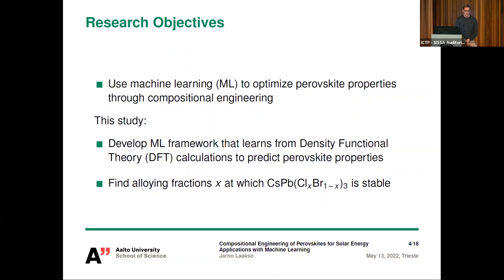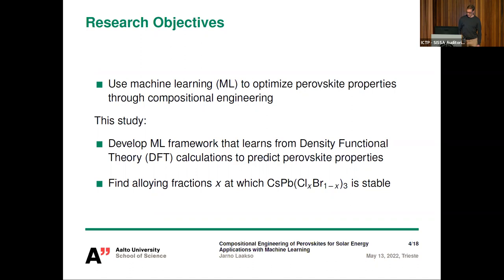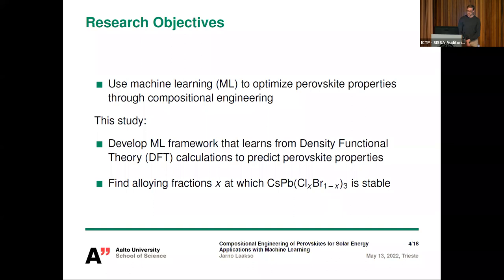In this presentation I'm going to show you the first couple of steps towards this goal. I'm presenting our development of a machine learning framework that learns from density functional theory calculations to predict perovskite properties quickly, and then applying that framework for finding stable alloying fractions for this inorganic perovskite material. Since it's inorganic and has ionic mixing in only one of the three sites, it's simple enough for a first test case, and it's also used in blue LEDs.